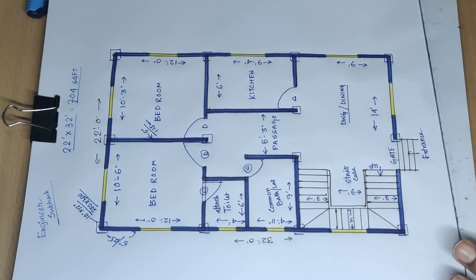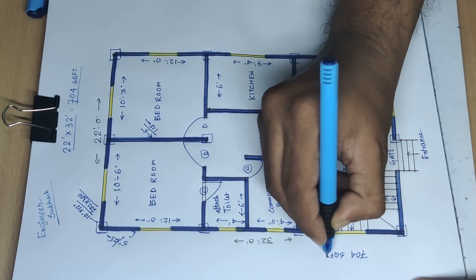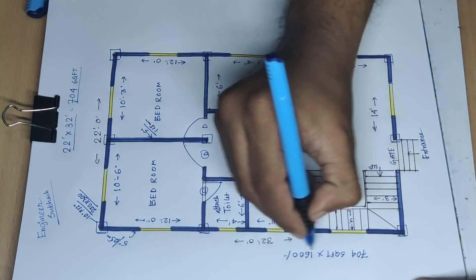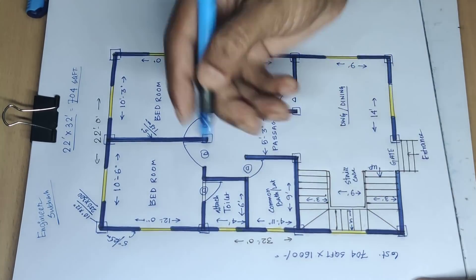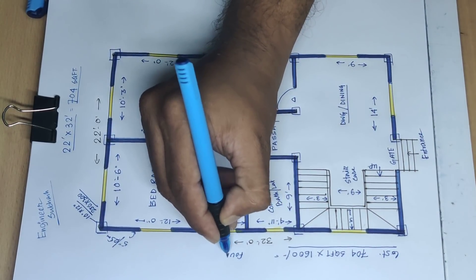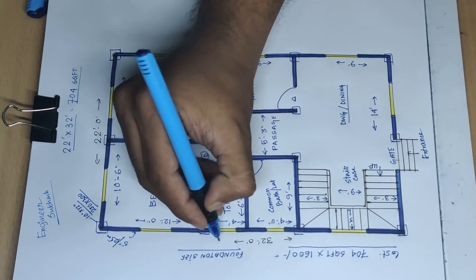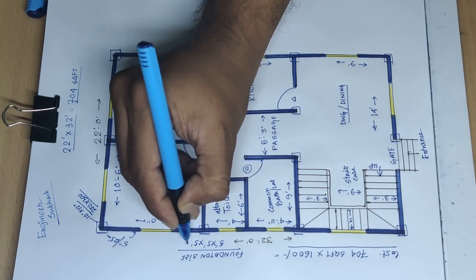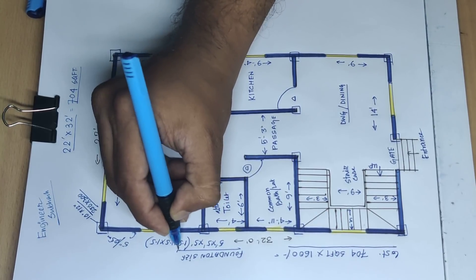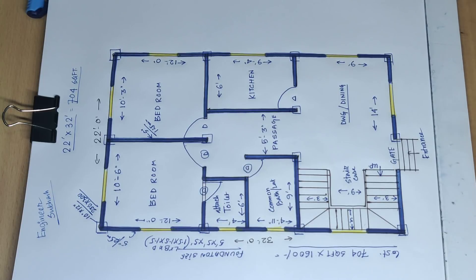This is 704 square feet. Building cost: 704 square feet into Rs. 1600 per square feet. Foundation size: 5 feet by 5 feet by 5 feet — 1.5 meter by 1.5 meter length, breadth, and depth. This is a 2 BHK house plan, 700 square feet. Thank you for watching.